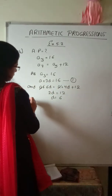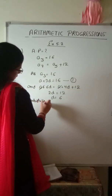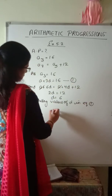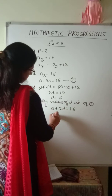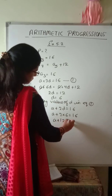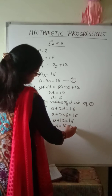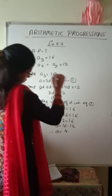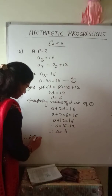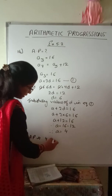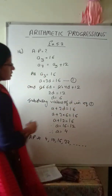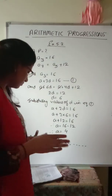Now substitute D equals 6 into equation 1: A plus 2 into 6 equals 16, so A plus 12 equals 16, giving A equals 4. Therefore the AP is: 4, 10, 16, 22 and so on. This completes question number 16.